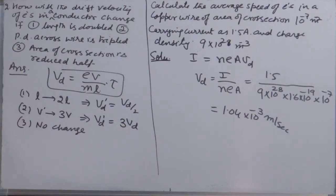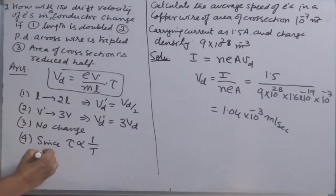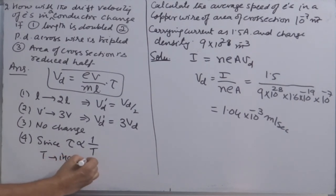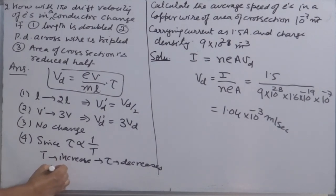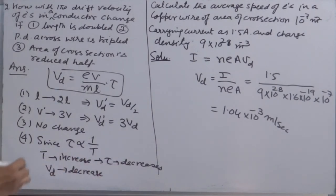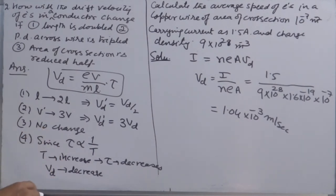One more factor to consider is the effect of temperature. Since relaxation time τ is inversely proportional to the temperature of the wire, when temperature increases, τ decreases, and therefore V_D also decreases. So V_D is directly proportional to τ, and since τ is inversely proportional to temperature, drift velocity is inversely proportional to temperature — with a rise in temperature, drift velocity decreases.